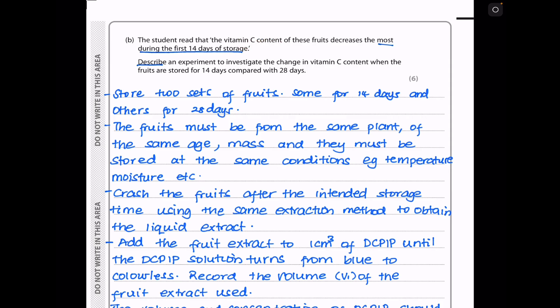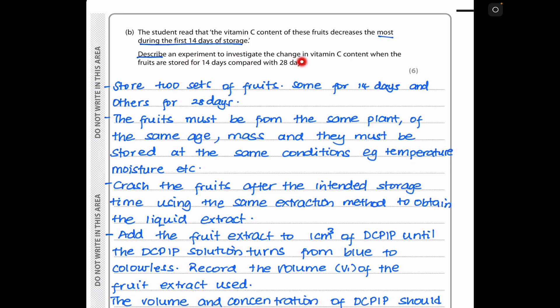In part B, the student read that the vitamin C content of these fruits decreased the most during the first 14 days of storage. They want you to describe an experiment to investigate the change in vitamin C content when the fruits are stored for 14 days compared with 28 days. To be able to get valid results, we need to carry out experiments for 14 days as well as 28 days, but the fruits that we use should be the same.